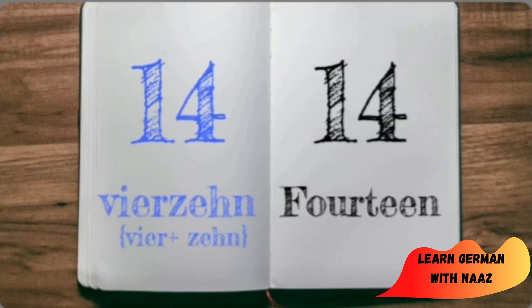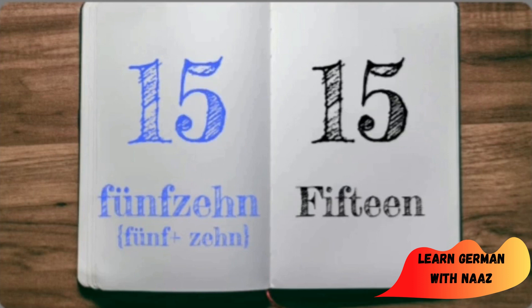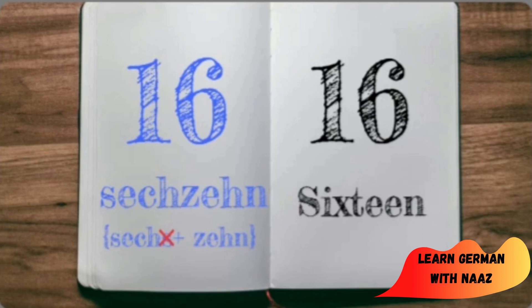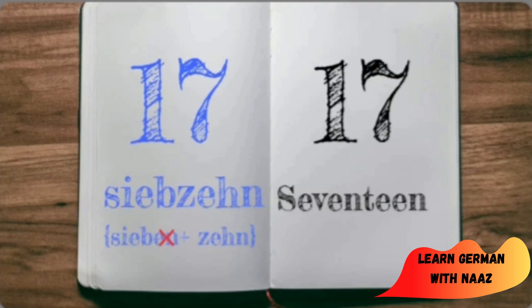Vierzehn — 14. Fünfzehn — 15. Sechzehn — 16. While writing Sechzehn, we do not write the last s of Sechs. Once again, sechzehn — 16. Siebzehn — 17. While writing Siebzehn, we do not write the last two letters of Sieben. Once again, siebzehn — 17.